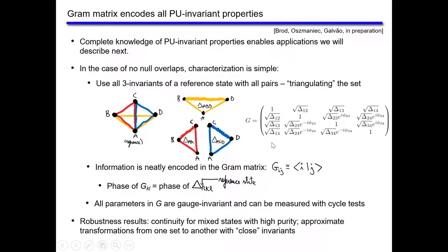We also have robustness results — mostly from Michal — showing this characterization works for mixed states with high purity, as approximations of pure states. This is relevant to experiments since measurements have finite precision. We have continuity bounds ensuring that reconstructed invariants are close to those of the ideal target state, and results showing that if two sets of states have close invariant values, one can be approximately transformed into the other by a unitary.